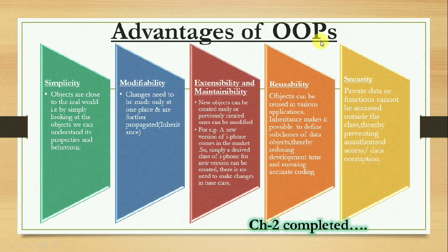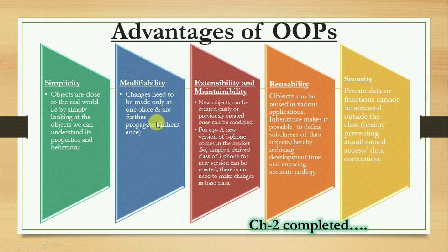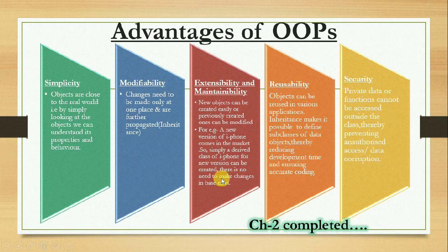The advantages of object-oriented programming: first is simplicity — objects are close to the real world, so by looking at the objects we can understand their properties and behavior. Next is modifiability — changes need to be made only at one place and are propagated through inheritance. Next is extensibility and maintainability — new objects can be created easily or previously created ones can be modified. For example, a new version of iPhone can simply be created as a derived class, with no need to change the base class.